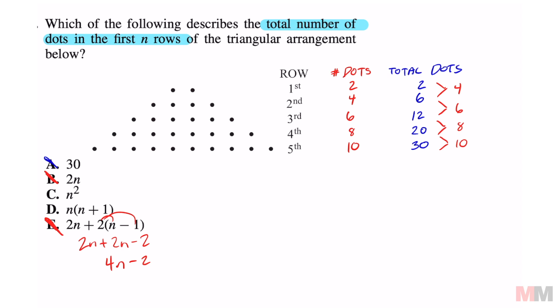Now we're choosing between C and D. At this point, I think the easiest route is just to test it out. In the first row, n equals 1. If I plug that into the expression n², which is going to be 1², that's going to equal 1, which contradicts this number right here, because that is saying that the total number of dots in the first row is 2. That means C is wrong.